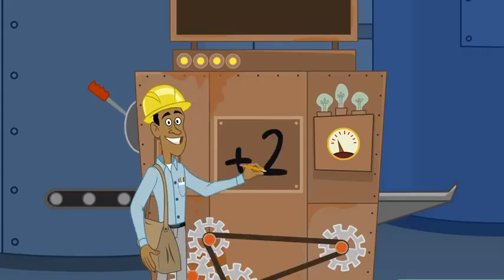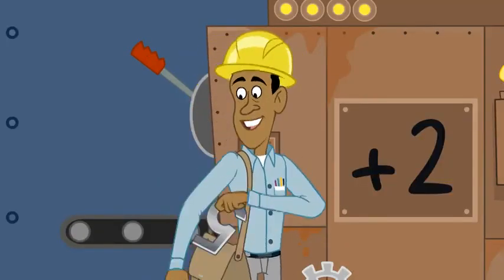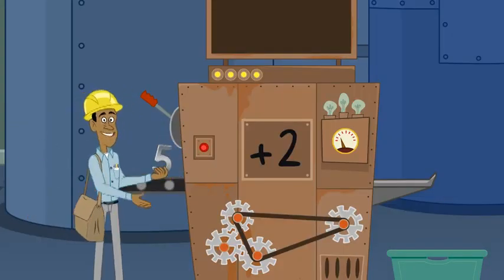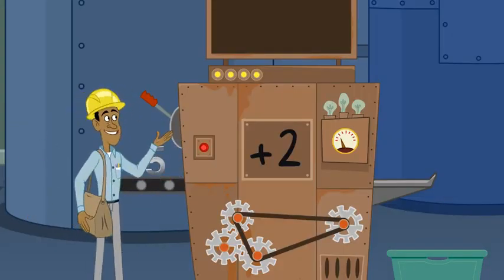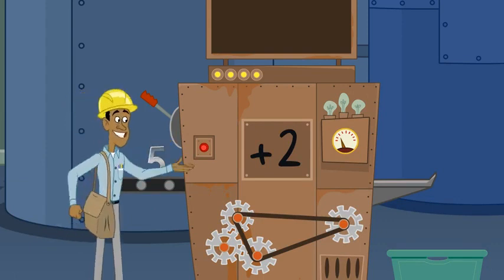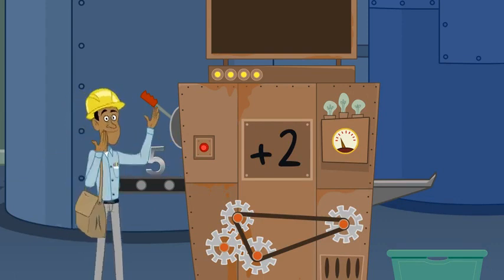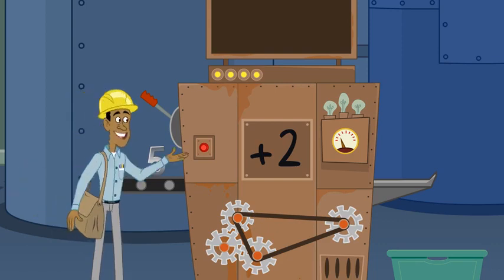If plus two is the right guess, when we put a five in this marvelous, mysterious function machine and pull the handle, we should see a seven in that tray. Why? Because five plus two is seven.